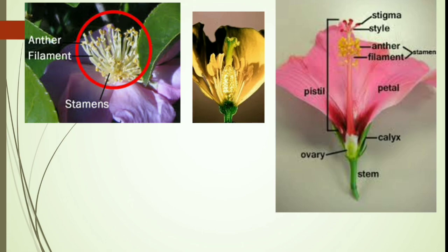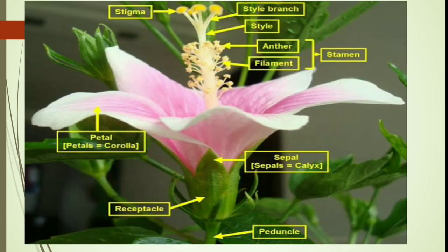Here you can see pictures more clearly — you can see the anther having pollen grains and filaments in an actual flower. Both anther and filament together are called stamen, which is the male reproductive part. You can also clearly see the stigma, style, anther, filament, petal, pistil, calyx, ovary, and stem labeled in a real flower, helping you understand all the parts very clearly.